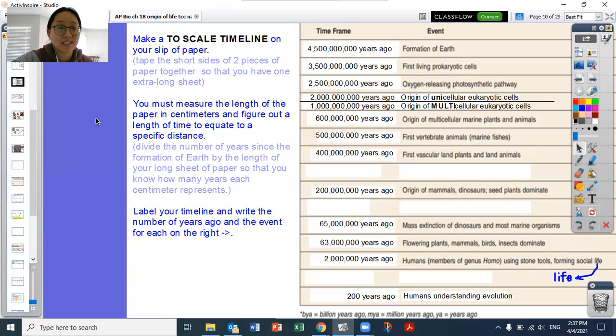It's going to be a lot of years that each centimeter represents because you're dividing 4.5 billion by however many centimeters you have. And then you're going to figure out how many years apart and how many centimeters apart on your paper these events belong on. And you're going to label your timeline with each of these event names and how many years ago they were. You can write like 4.5 BYA or billion years ago, 3.5 BYA. And when you get down to the millions, you can write 400 MYA for million years ago, to make it shorter.